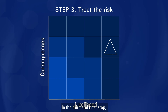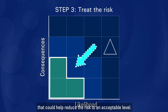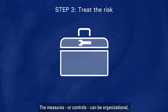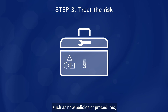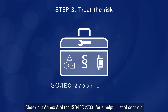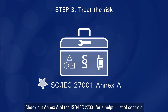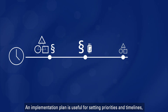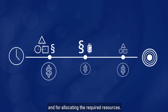In the third and final step, you must outline measures that could help reduce the risk to an acceptable level. The measures or controls can be organizational, such as new policies or procedures, or they might be technical, such as a patch or virus scan. Check out Annex A of the ISO IEC 27001 for a helpful list of controls. Start with the implementation of the most critical controls. An implementation plan is useful for setting priorities and timelines and for allocating the required resources.